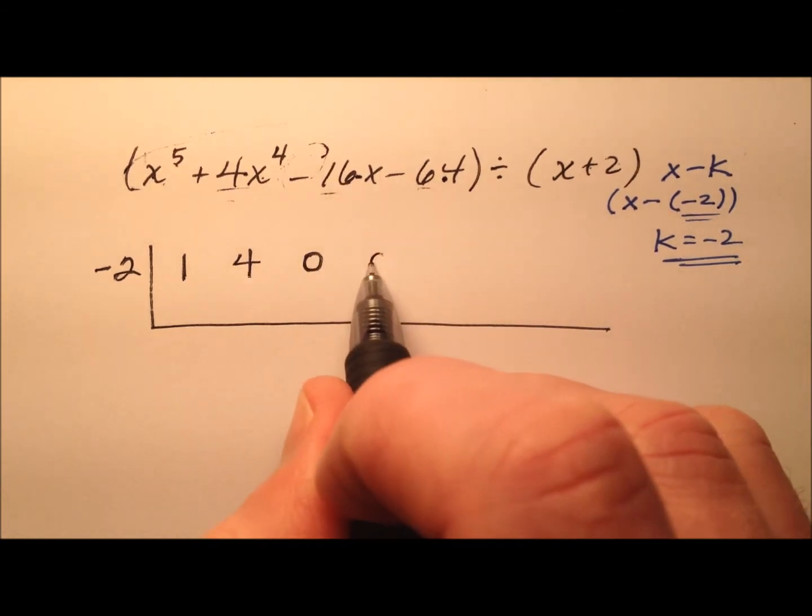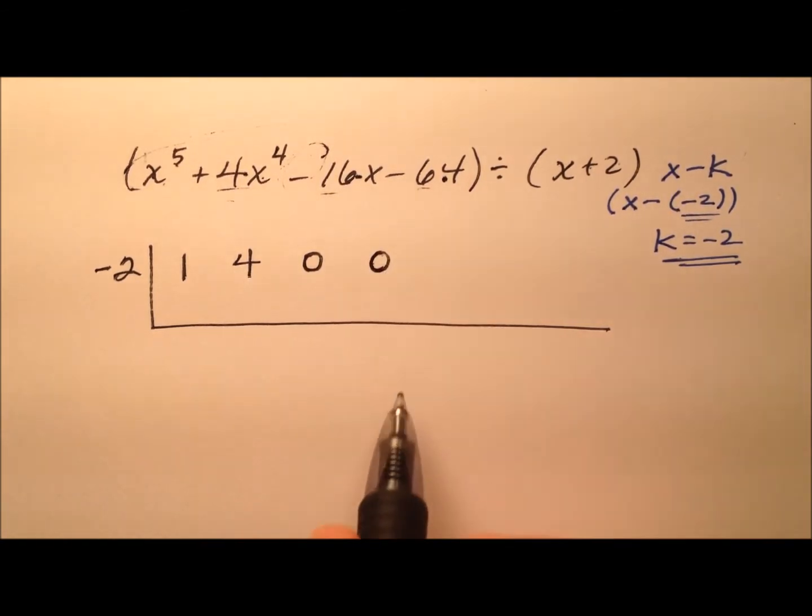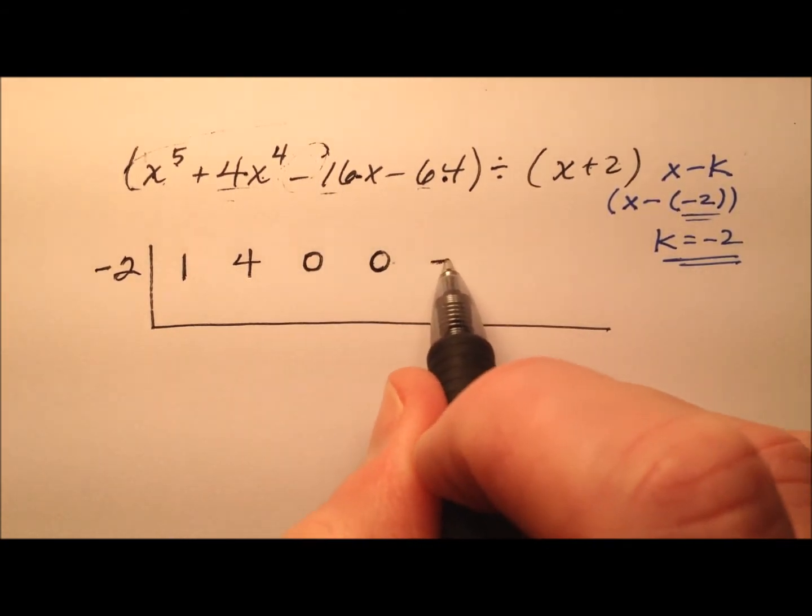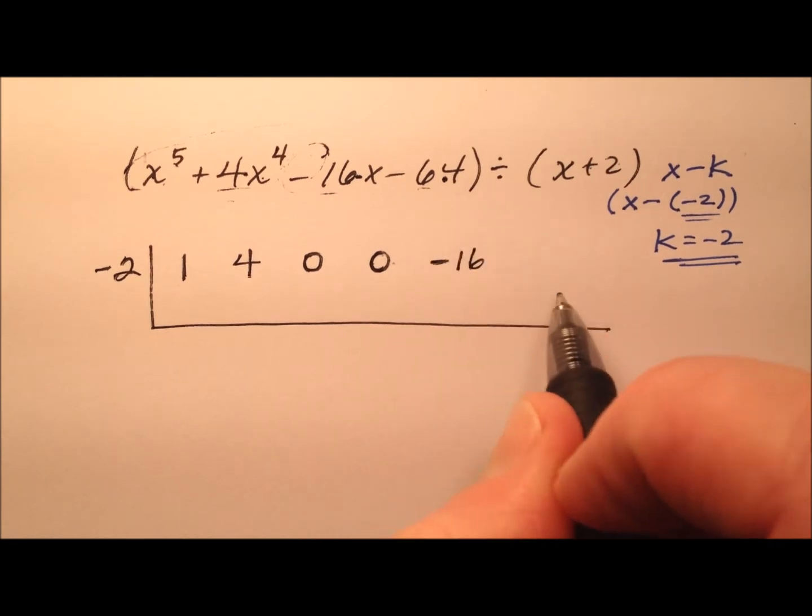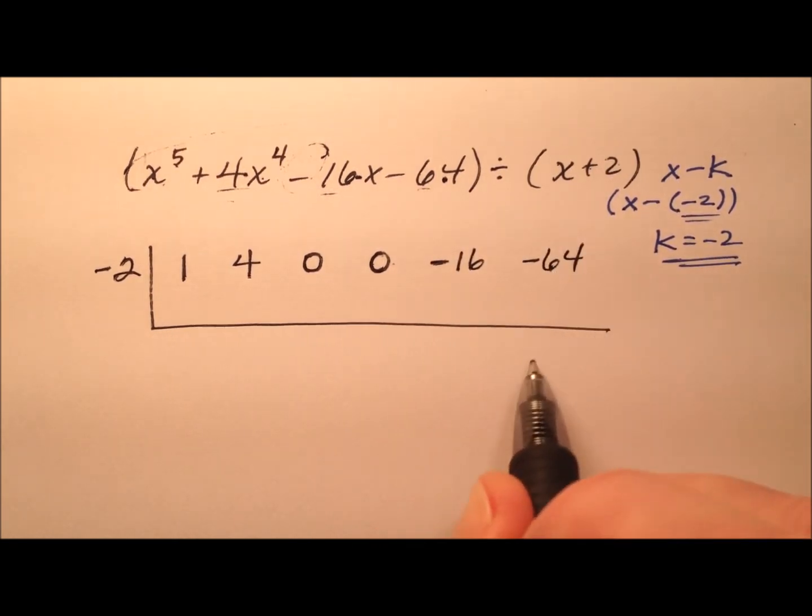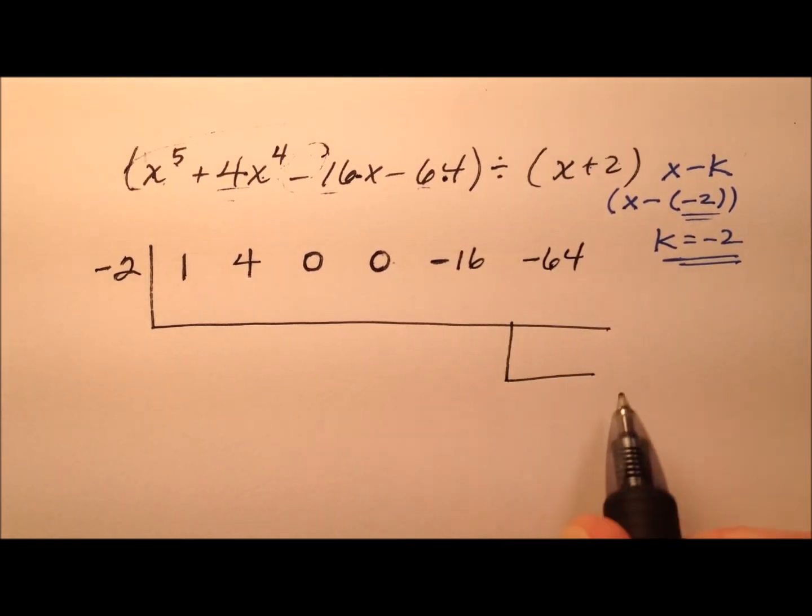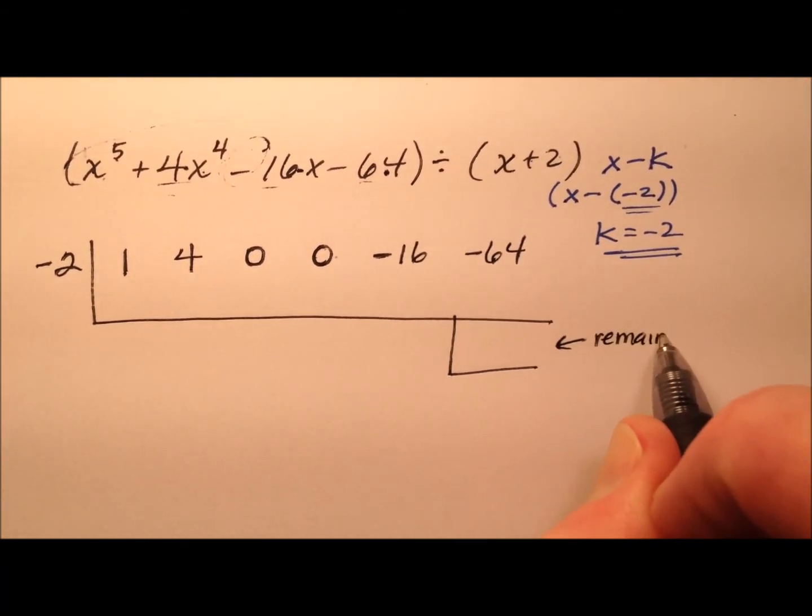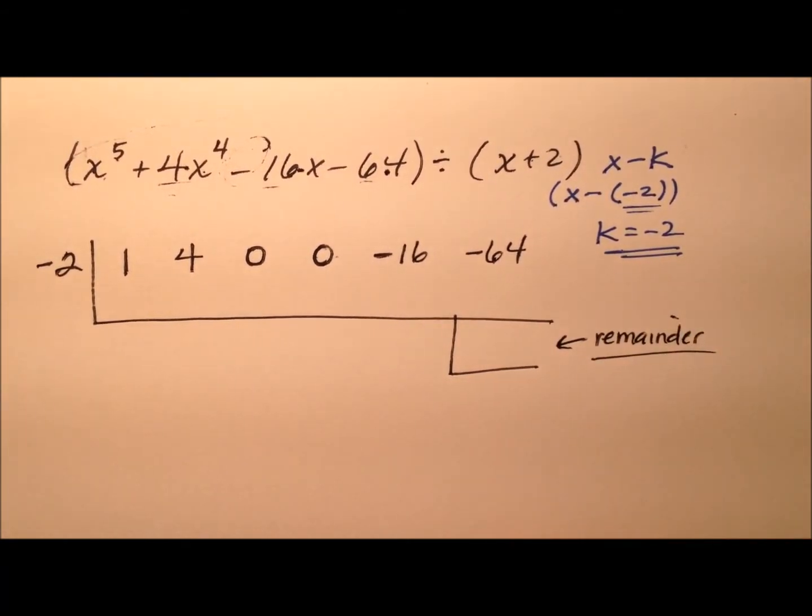And then our quadratic term, degree two, that's a coefficient of zero as well because it's missing, so I'll put a zero there. Our linear term has negative sixteen, and then our constant is negative sixty four. I'll put my little box right here, and this is my remainder if I happen to have one.